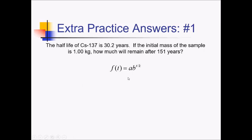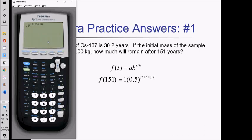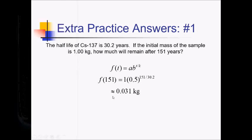We're looking for F of T when we plug in 151. Our initial value is 1 kilogram. The B value is one-half, since it's half-life. T is 151, and K is the half-life of 30.2 years. Plugging into the calculator: 0.5 to the 151 divided by 30.2 gives 0.03125, so rounding to 0.031 kilograms.